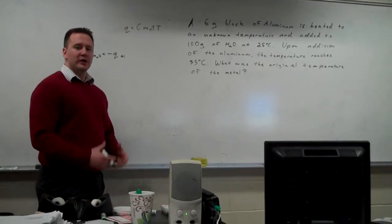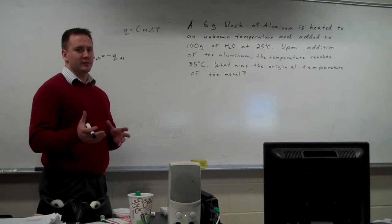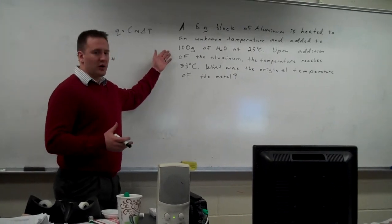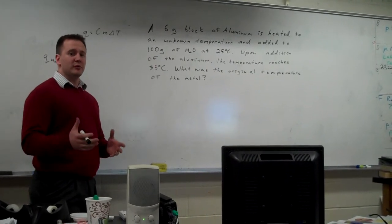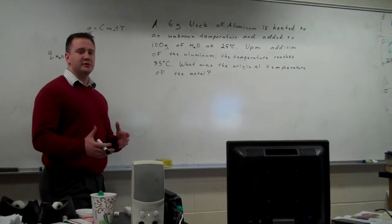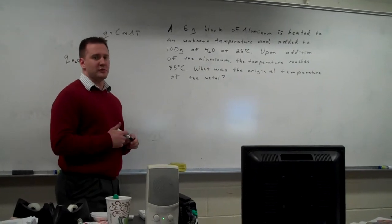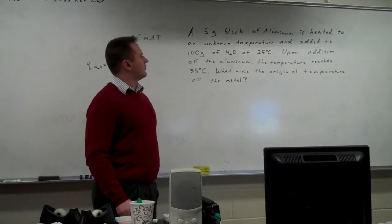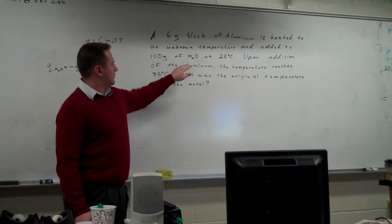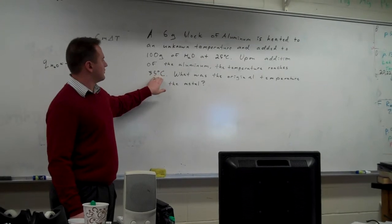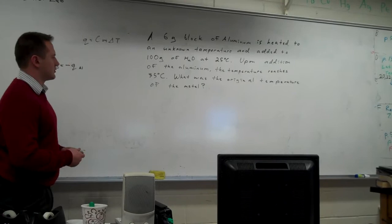In the lab, we're going to heat up an aluminum block on a hot plate to an unknown temperature. Then we're going to add it to a sample of water at room temperature and see how much the temperature of the water rises. From that, we'll be able to figure out the amount of energy the aluminum metal gives off to the water and calculate what the original temperature of the block was. For example: a 6-gram block of aluminum heated to an unknown temperature is added to 100 grams of water at room temperature. Upon addition, the temperature reaches 35 degrees — so the water goes up 10 degrees — and we're going to calculate the original temperature of the metal.